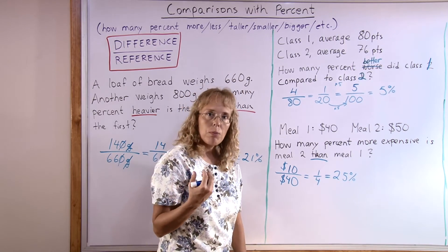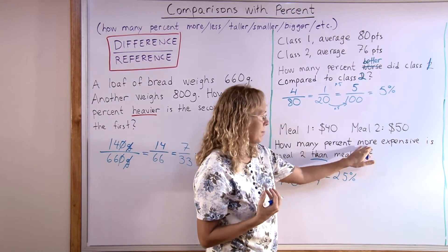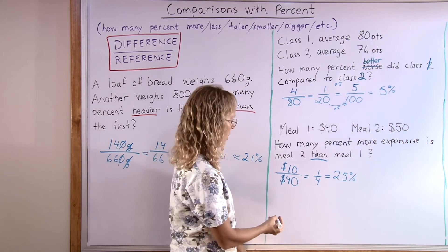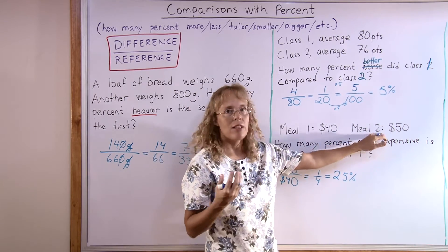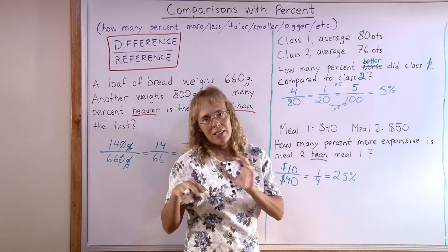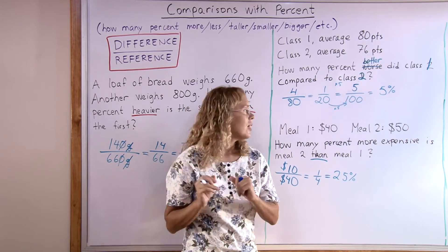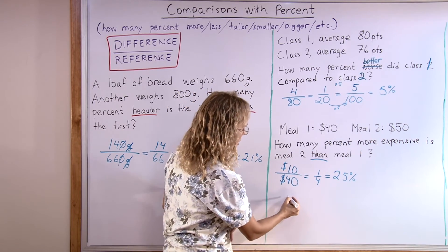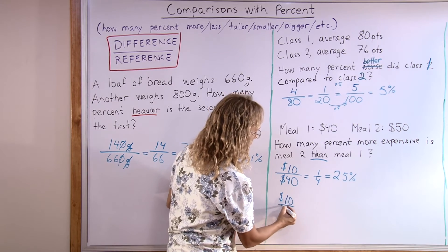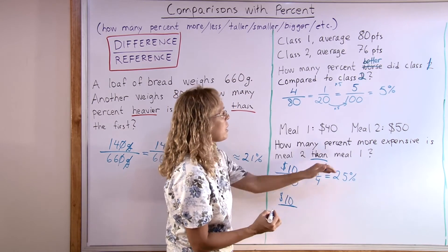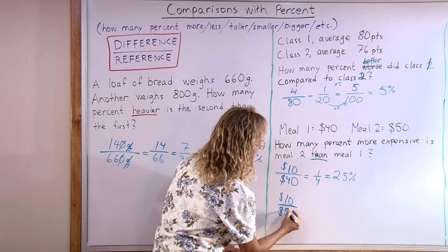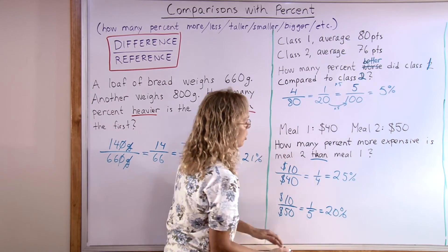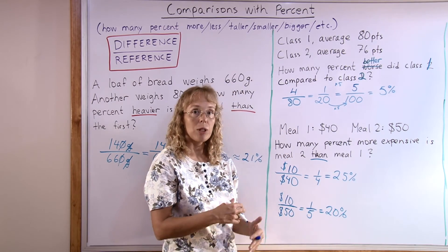But let's say I switch the problem and ask how many percent cheaper is meal one than meal two? You can imagine that maybe meal two was there first, and then meal one came along, which is a cheaper meal. So we are asking how many percent cheaper is meal one compared to meal two? Again, the difference is $10. But now our reference would be meal two, $50. And we would get 1/5, which is 20%. So you can see it does make a difference which one you are comparing to.